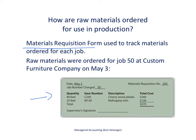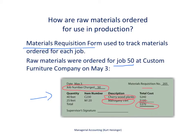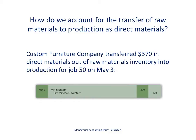Let's assume we're working on one particular job — job number 50 at Custom Furniture Company. On May 3rd, two different types of wood are pulled out of the raw materials warehouse: cherry wood planks for the table and some mahogany trim, all for job number 50. This is the materials requisition form used to request that those materials be pulled out of raw materials inventory and put into production. The next slide will show how we record that $370 worth of materials moved from raw materials inventory into work in process inventory.